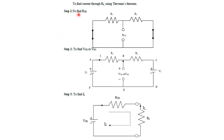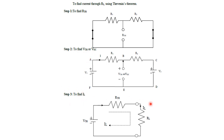The steps involved to find the current through the load resistor using Thevenin's theorem are: the first step is to find R-Thevenin, the second step is to find V-Thevenin, and finally we can find the current through the load resistor.